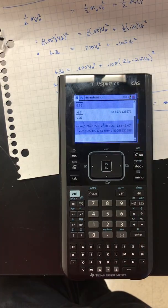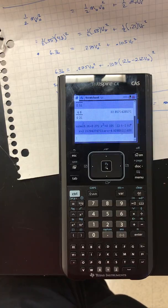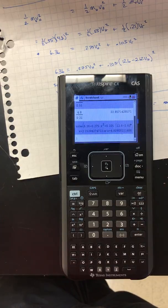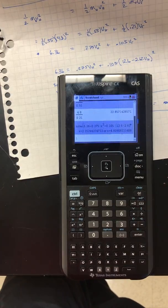It could either be 2.15 or 4.8 - those are the two answers. In this case, it turns out that 2.15 is the one that makes sense. That's how you use a solver. Thank you.